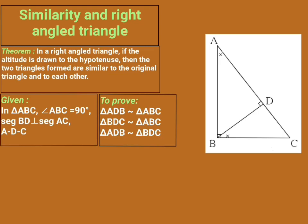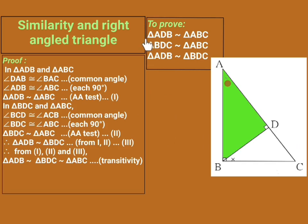Now we move towards the proof. We take the first pair of triangles: triangle ADB (the green colored triangle) and triangle ABC (the whole triangle). In triangle ADB and triangle ABC, angle DAB is congruent to angle BAC. This is the same angle — it is common to both triangles, but the names are different. For triangle ADB the name is angle DAB, and for triangle ABC the name is angle BAC.